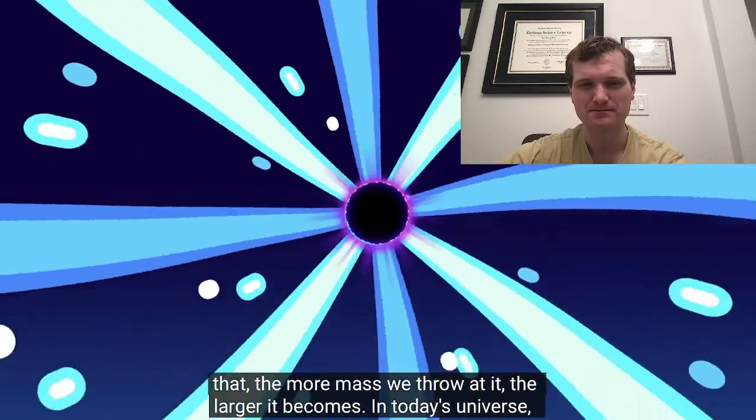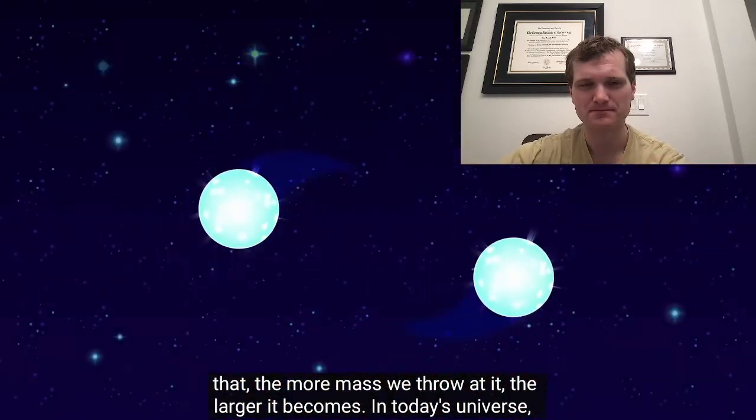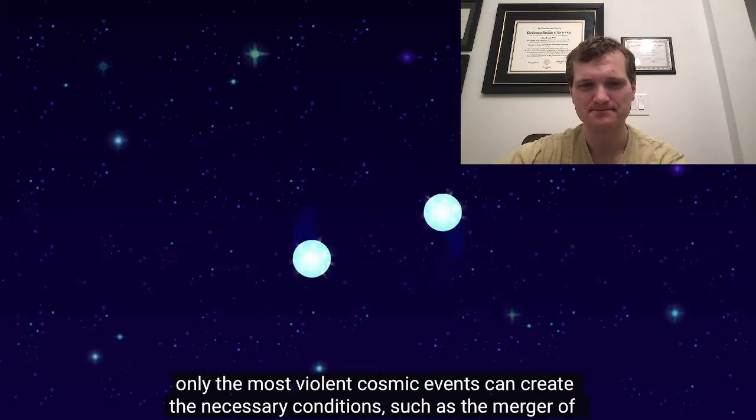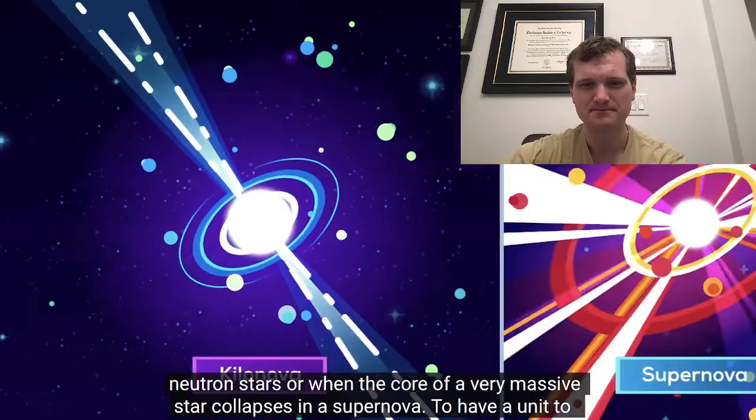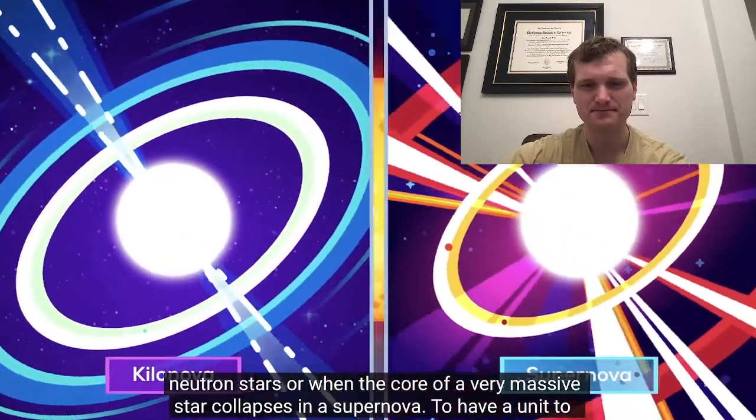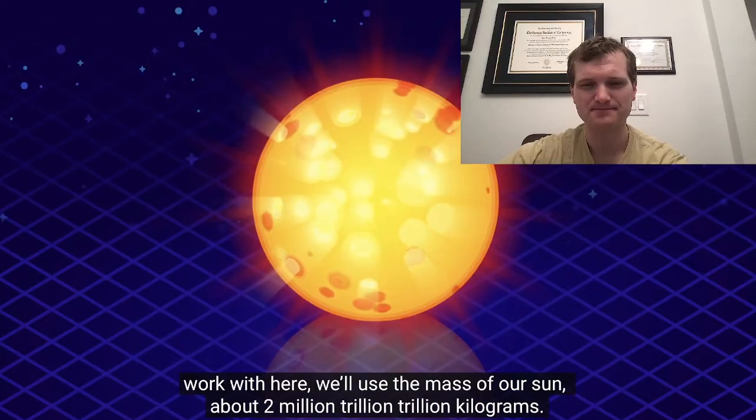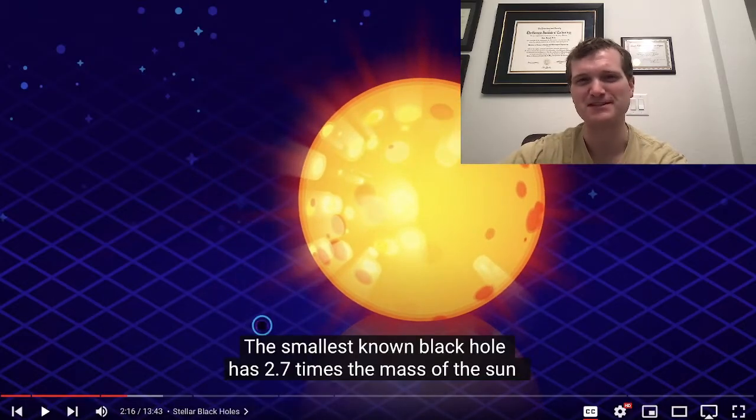The black hole we need to compress enough matter so that it collapses into itself. After that, the more mass we throw at it, the larger it becomes. In today's universe, only the most violent cosmic events can create the necessary conditions, such as the merger of neutron stars or when the core of a very massive star collapses in a supernova. To have a unit to work with here, we'll use the mass of our Sun, about two million trillion trillion kilograms. Interesting unit of measure.